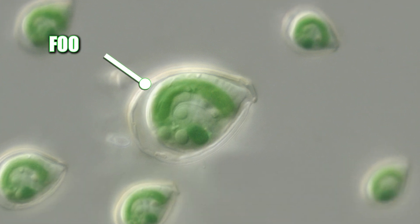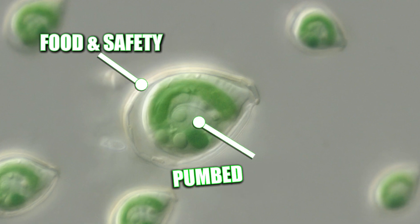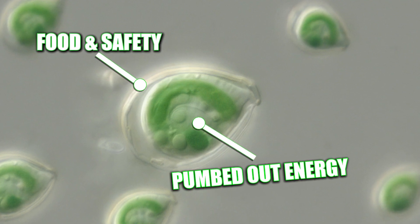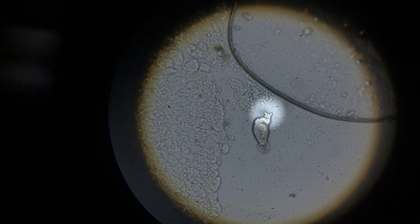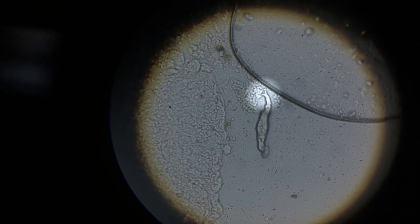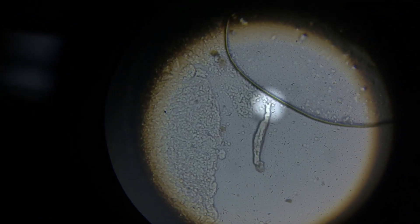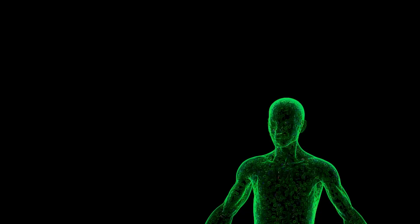The host cell provided food and safety, and in return, the bacteria pumped out energy just enough to keep their new home alive. Over time, both sides became so dependent on each other they couldn't survive apart. Eventually, the invading bacteria gave up parts of their own DNA and became fully embedded in the host cell's system.